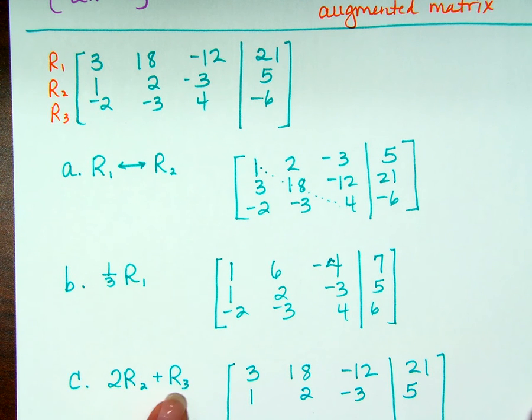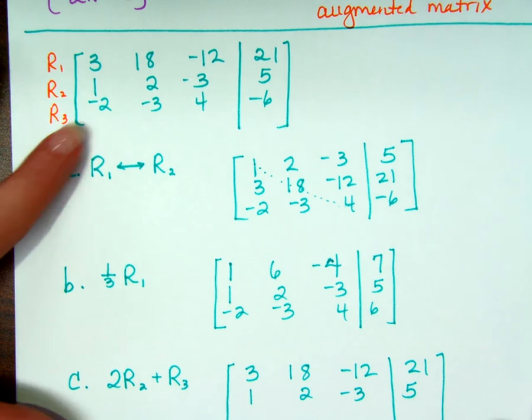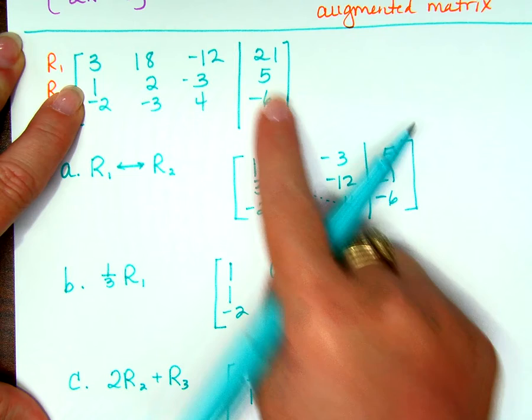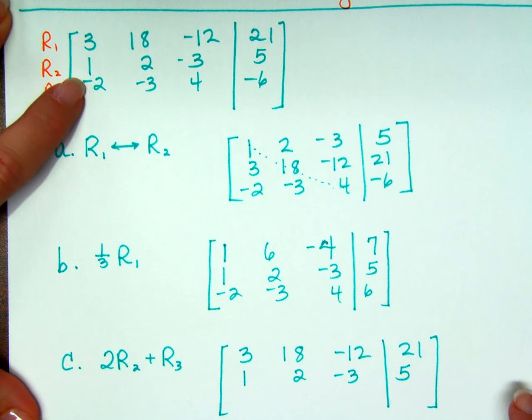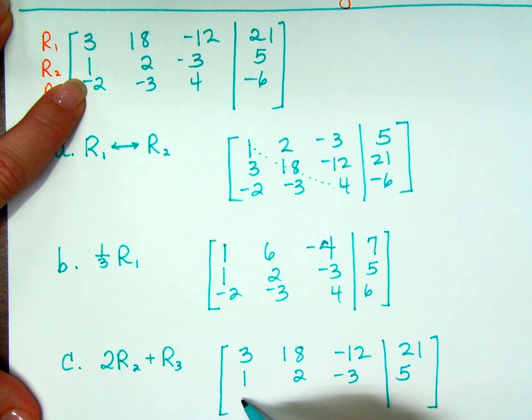So, what do we do with row 1? We leave it. What do I do with row 2? I'm eventually going to multiply it by 2 and add it to row 3, but what do I do with the original row 2? I leave it. 1, 2, negative 3, and 5. It's like I start with this one and end with this one, so that's where it lives. So, 2 times row 2.